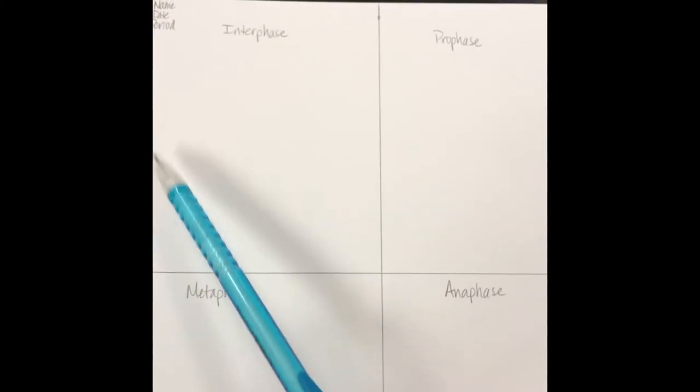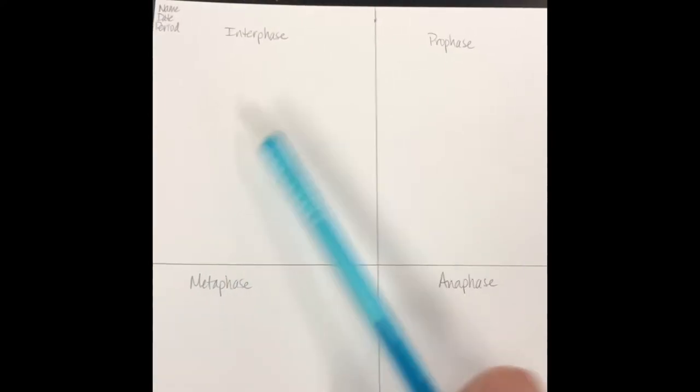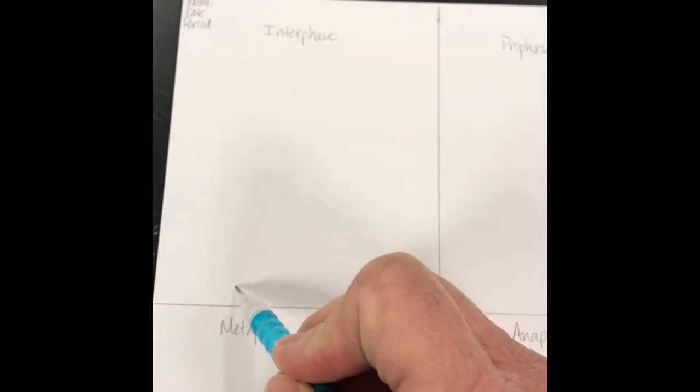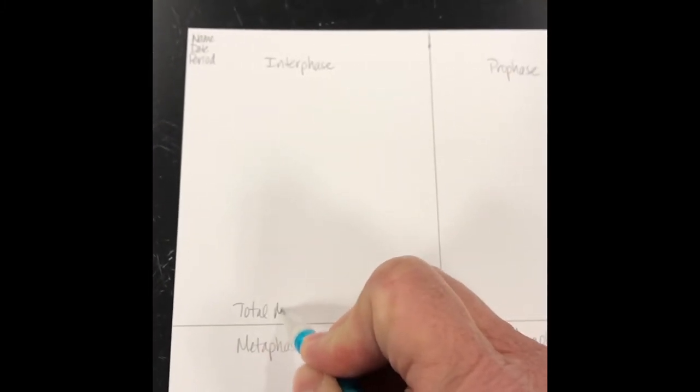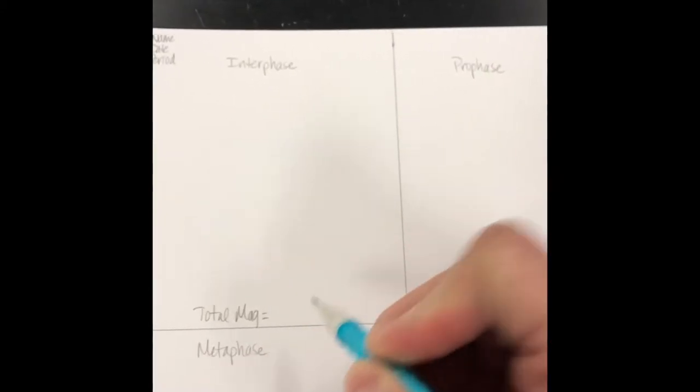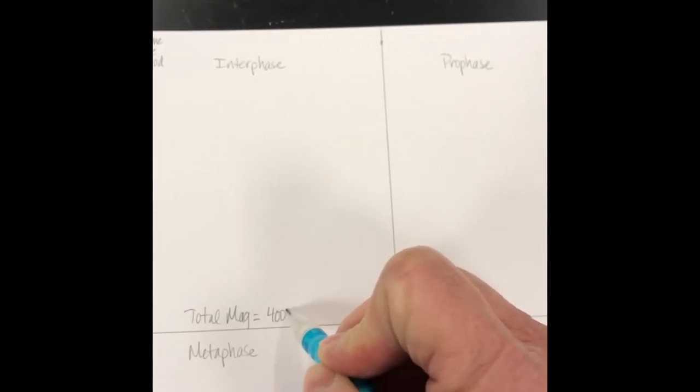So we're going to look for phases. Interphase, we're going to put in this first quadrant, prophase, prometaphase. We have a metaphase, an anaphase, and then this one's going to be telophase with cytokinesis. Now, at the bottom of every quadrant, I generally like you to put total magnification. So I always go total mag equals, and we're drawing, like I said, on 400x. So you need that below every picture.